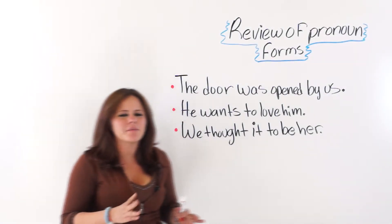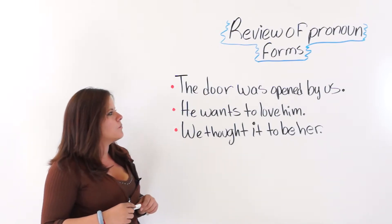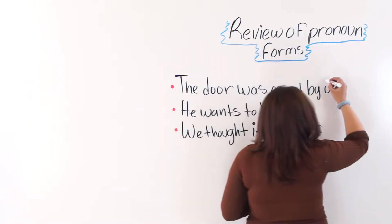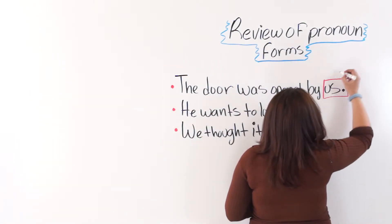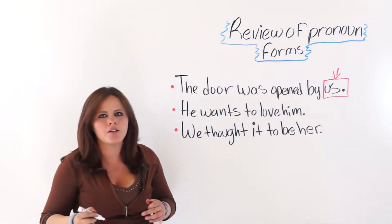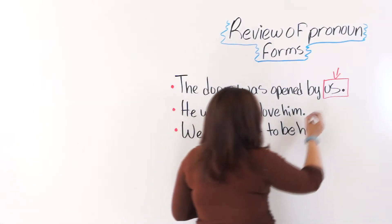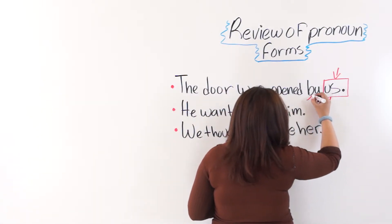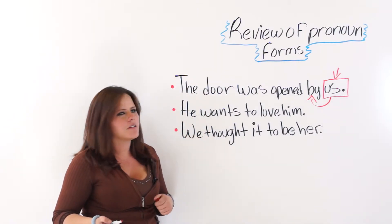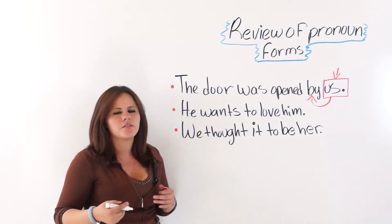I have three more examples here for you. The first one says, the door was opened by us. As you can see here, us is a pronoun we are using, and it is an object pronoun. Us, in this sentence, is working as the object of this preposition. The door was opened by us, so it becomes the object of by.